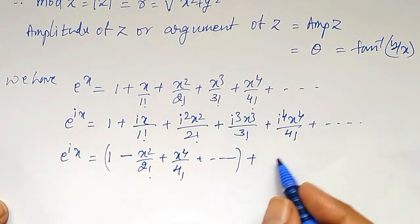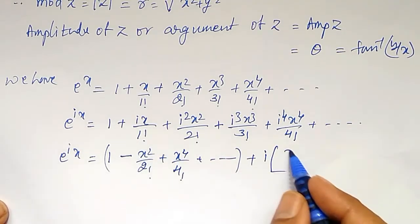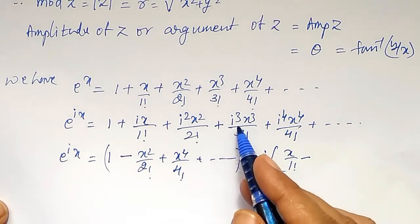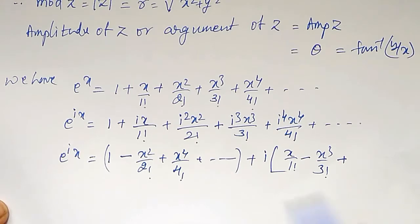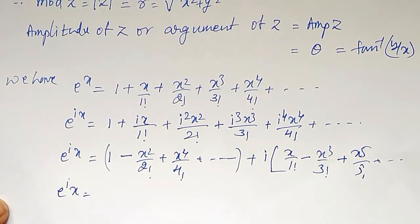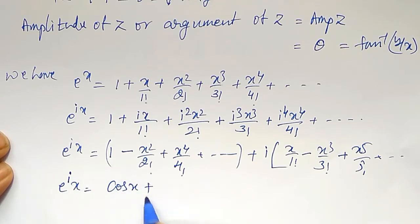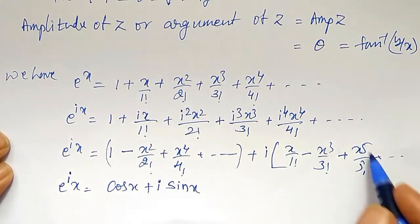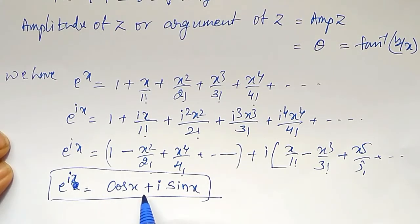From the odd terms, taking i common, we get i into x divided by 1 factorial, minus x cubed divided by 3 factorial, plus x raised to 5 by 5 factorial, plus so on. But this first bracket is the expansion series for cos x, and this bracket is expansion for sin x. Therefore, e to the power ix equal to cos x plus i sin x.